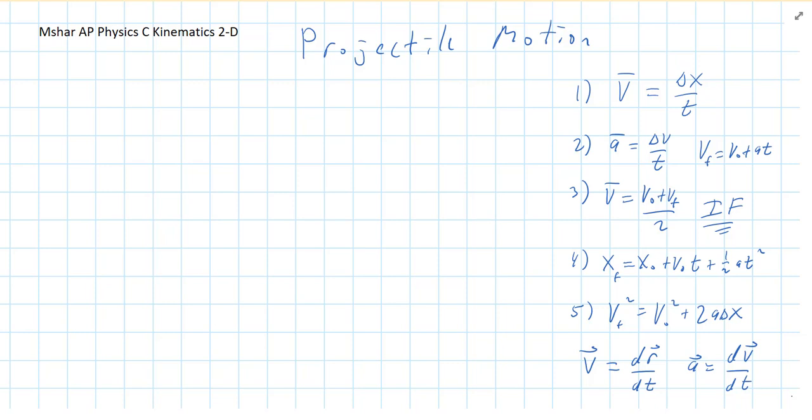So first of all, a quick review of what does projectile motion mean. If I have something flying through the air, it's a projectile if and only if the only force acting on it is gravity. So let's say it's a baseball. The force of gravity acts down on it. While it's in my hand and I'm throwing it, it's not a projectile. When it lands, it's not a projectile. But while it's in the air, and again, assuming we're ignoring air resistance, it's a projectile.